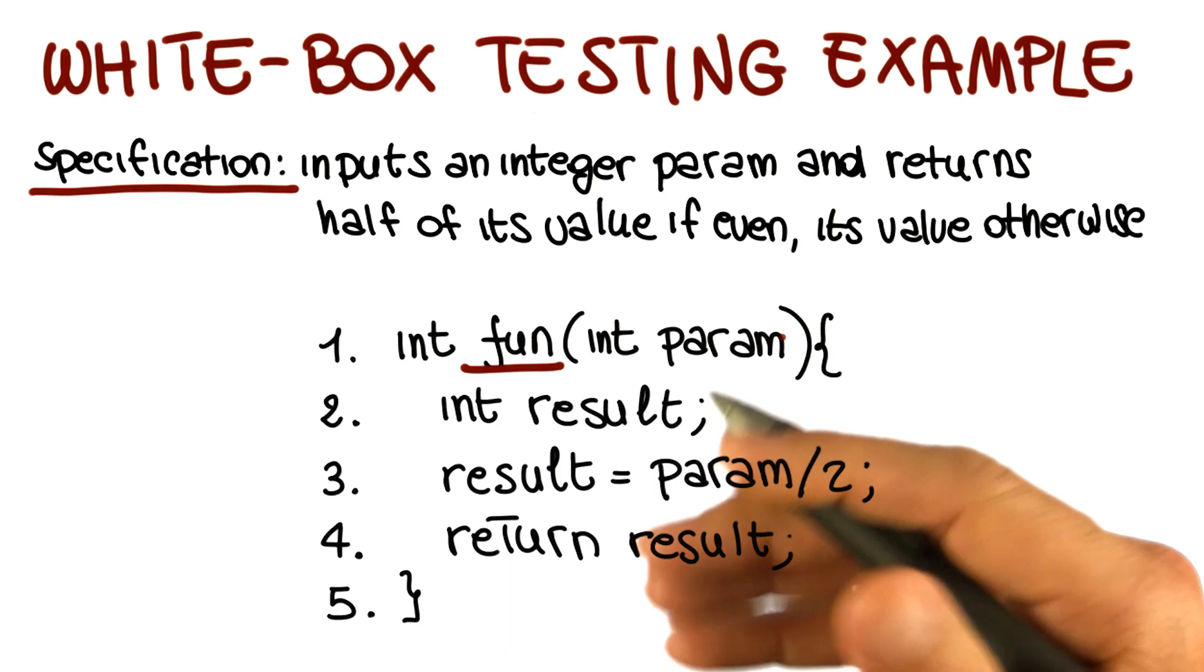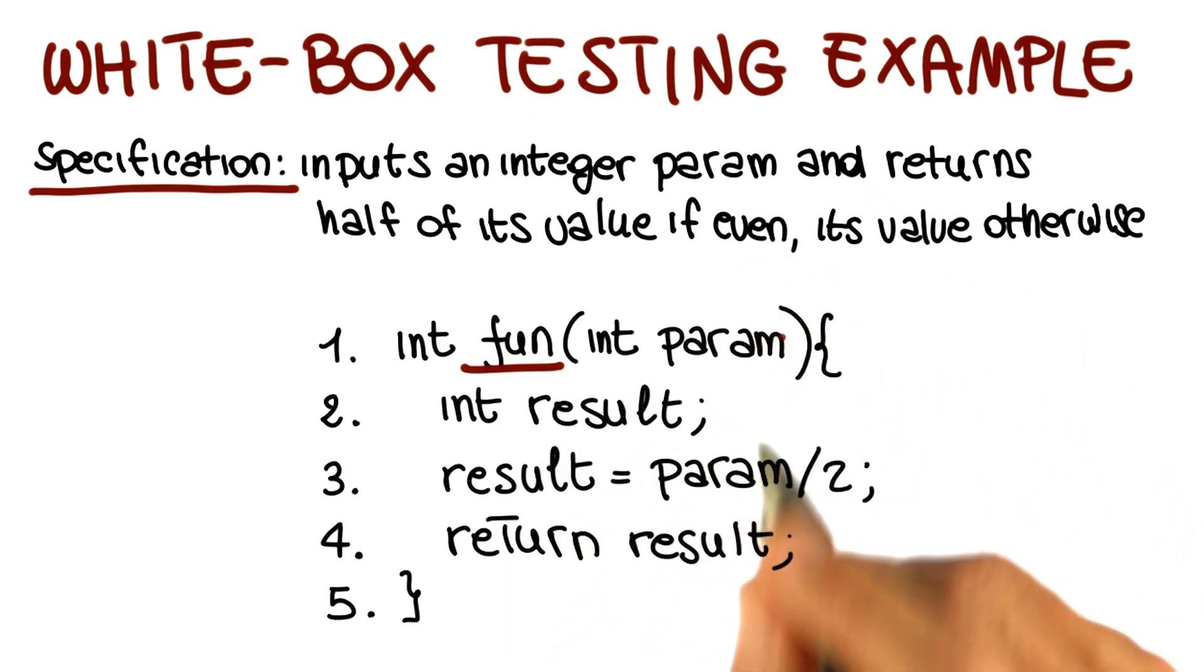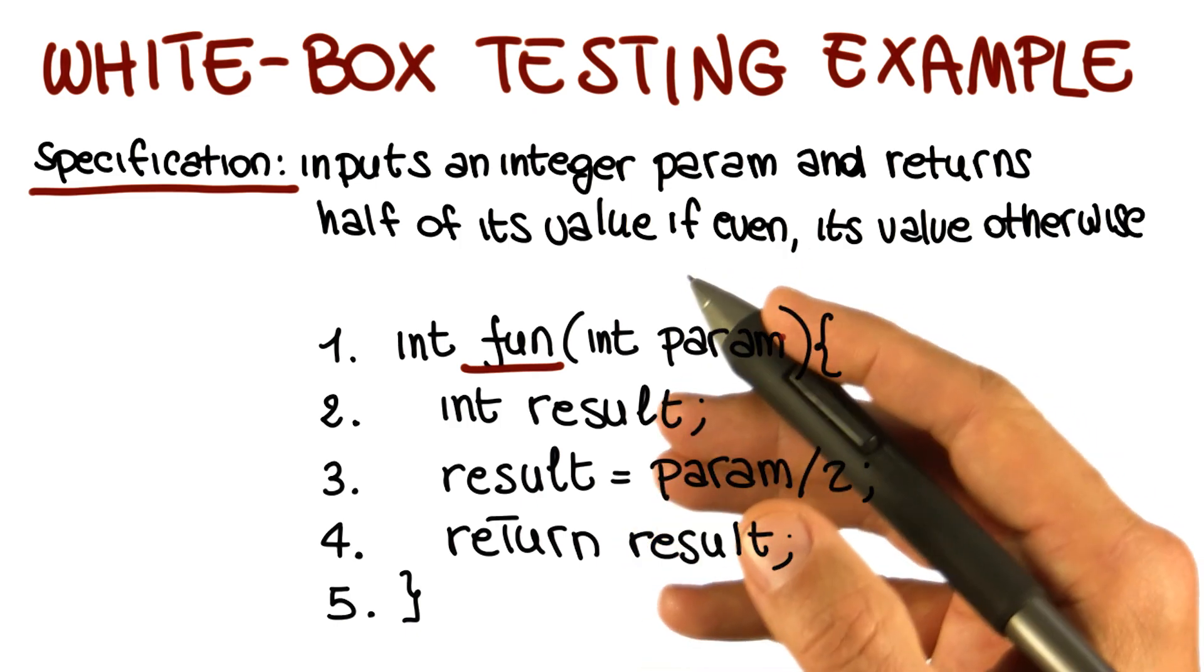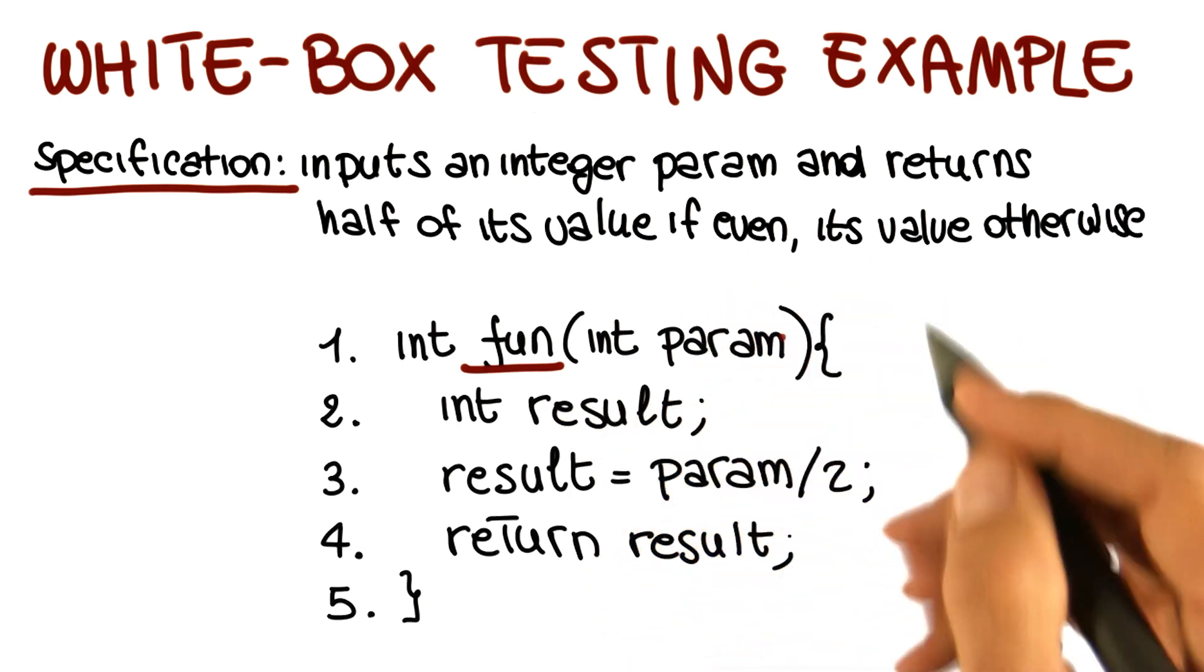So these two examples are just very small examples and they're kind of stretched. But these kind of issues occur on a much bigger scale and in much more subtle ways in real world software. And so, what these examples do is to show you how black box and white box testing are really complementary techniques.